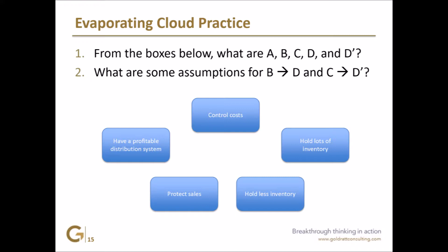Transportation — obviously trucks break down, ships break down, all that kind of stuff. It may not be a huge part, but we tend to hold more inventory than what those uncertainties represent. So on the bottom branch: in order to protect sales, we want to hold lots of inventory because demand is uncertain, lead times are long, and the lead time may not always be the same — it's also uncertain.